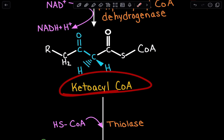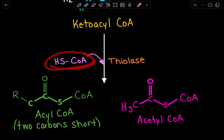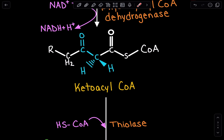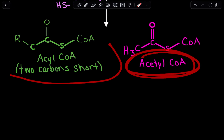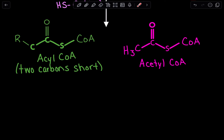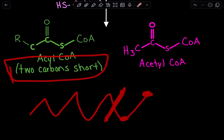We have this ketoacyl-CoA. The next step uses a thiolase for a thiolysis reaction, in which we introduce a coenzyme A group. We are splitting this ketoacyl-CoA — taking those first two carbons and splitting them off. We get acetyl-CoA as a product, and then the remaining acyl-CoA. Fatty acids are of varying lengths, so what we just did was remove two carbons — the remaining acyl-CoA is now two carbons shorter.